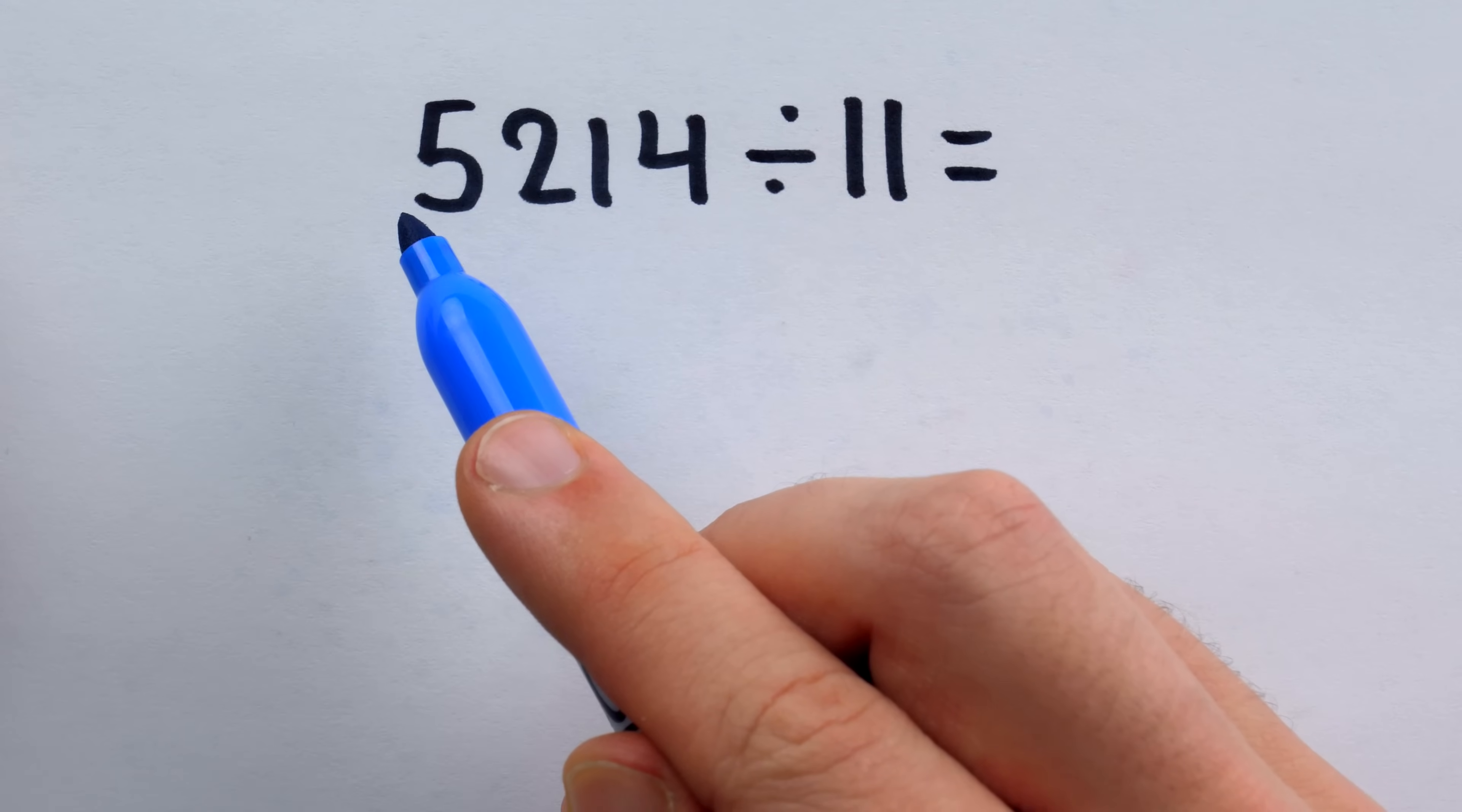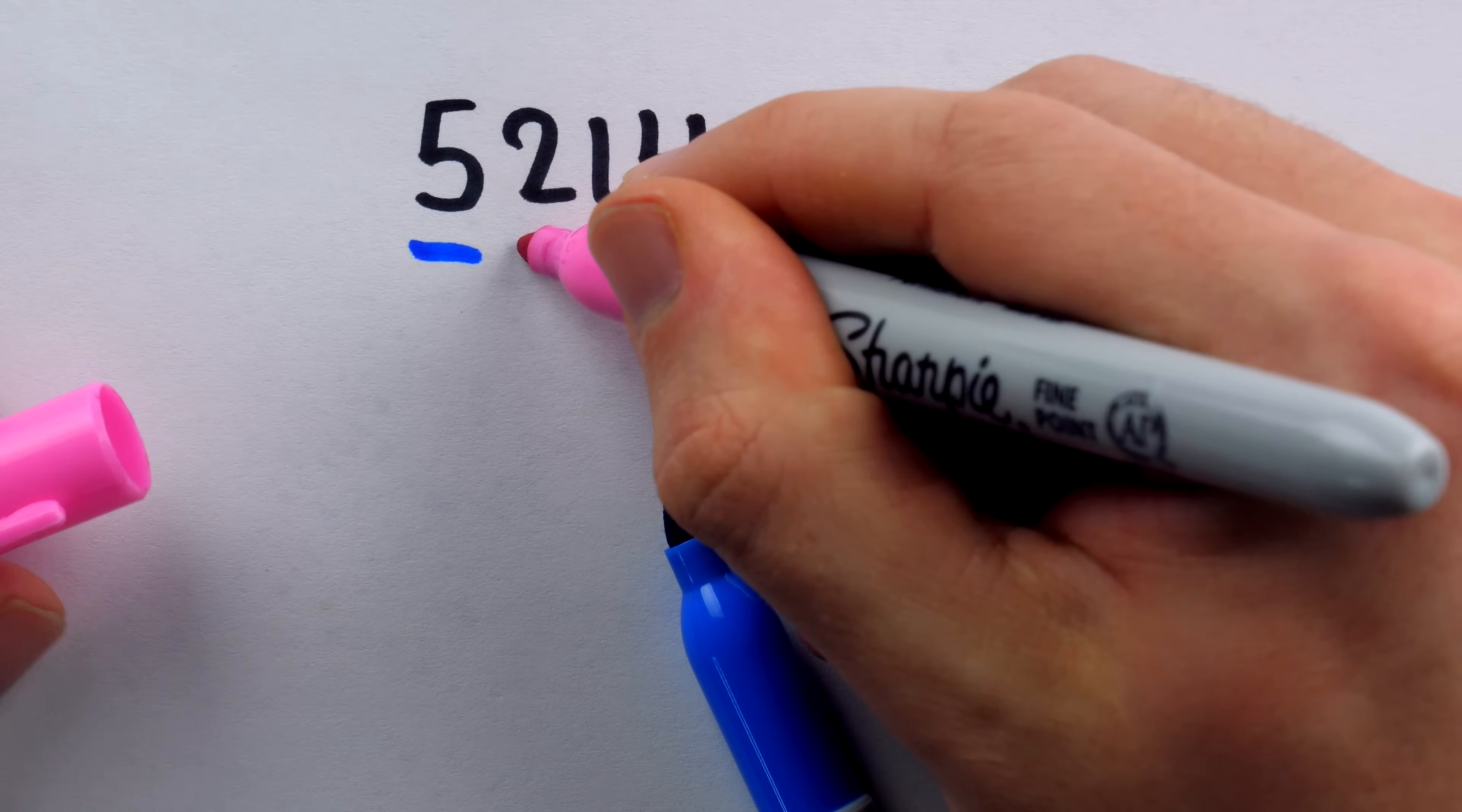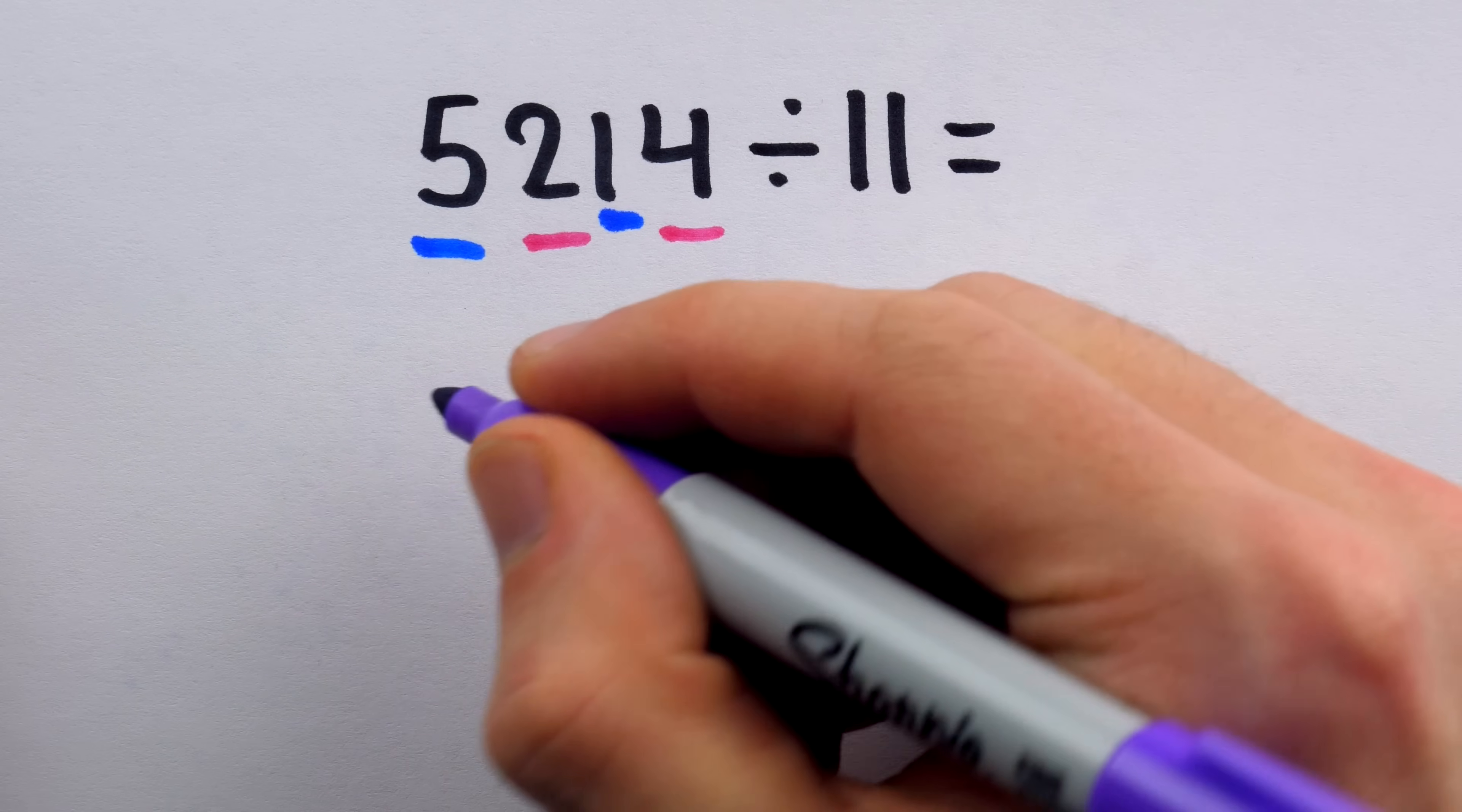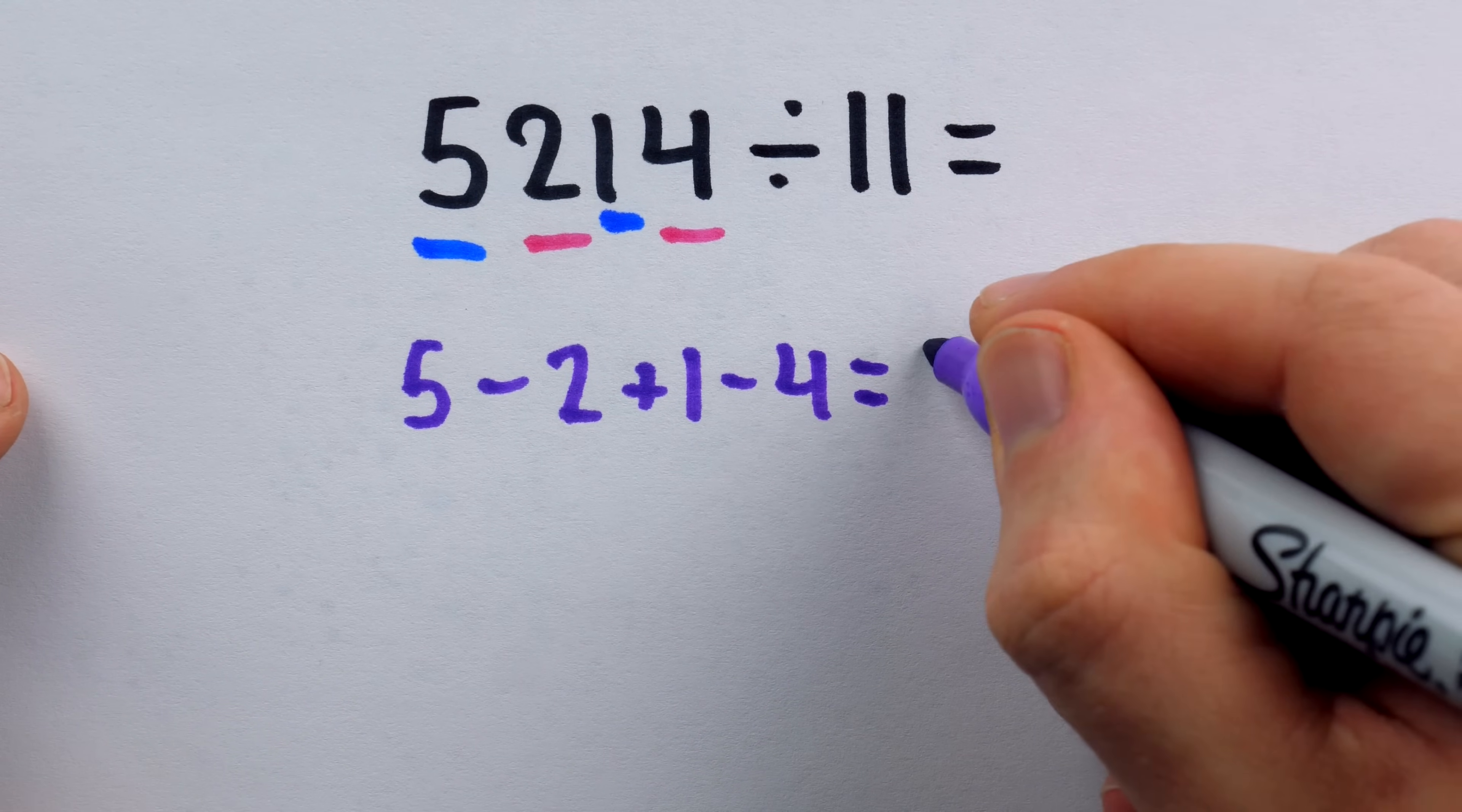What we have to do is calculate the alternating sum of the digits. That means we need to do 5 and then minus 2, I'm color coding here, and then plus 1 and then minus 4. So it's an alternating sum, plus minus, plus minus. Doing that calculation gives us 5 minus 2 plus 1 minus 4.